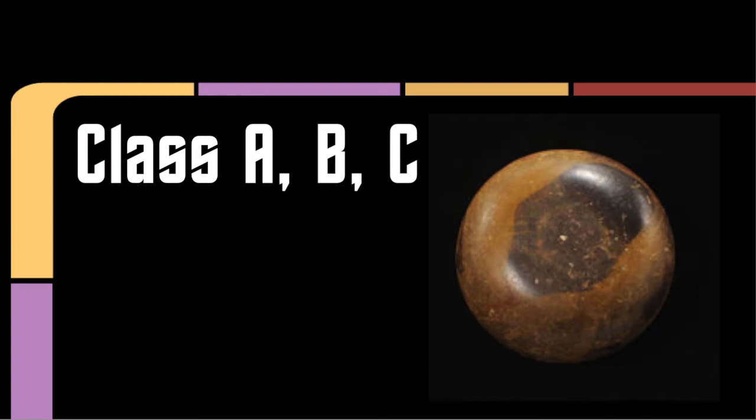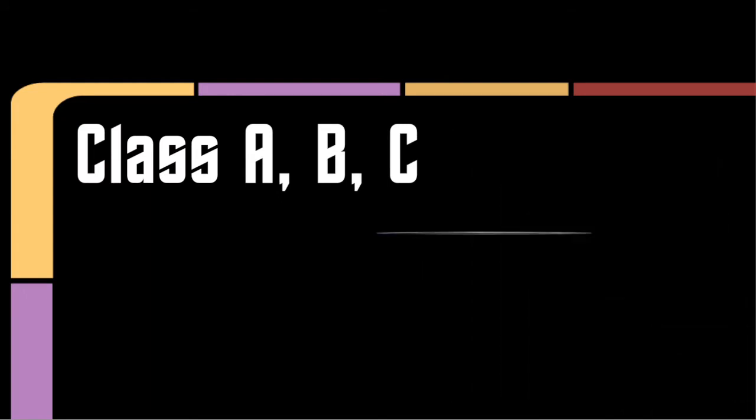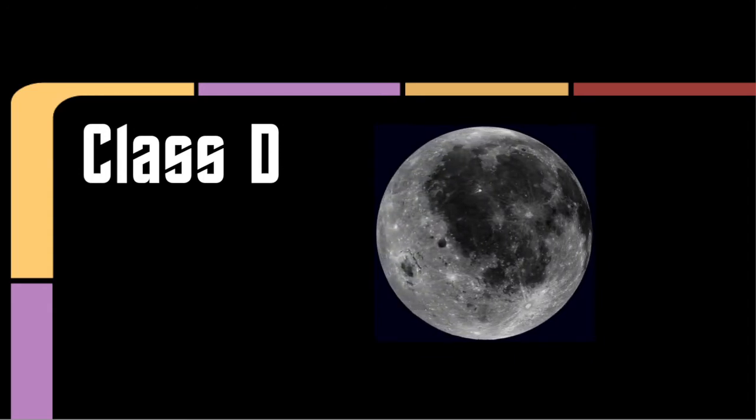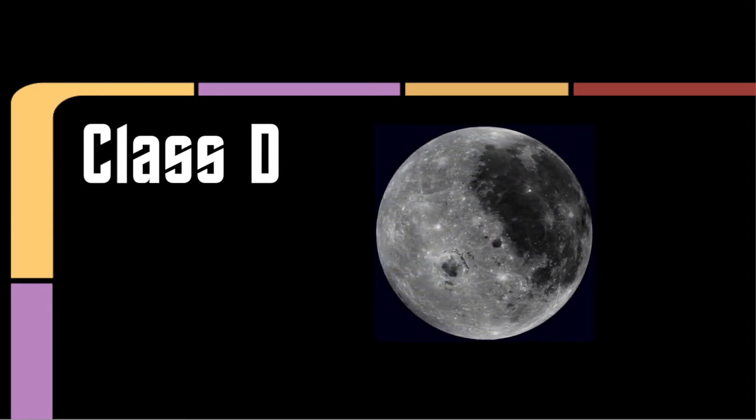Class A, B, and C planets are all younger planets. Their class depends on their age and solidity of their cores. Class D planets don't really have too much going for them. Some good analogues for Class D worlds are the Moon, Mercury, and Pluto.